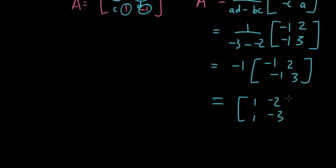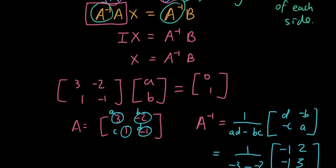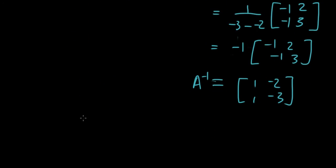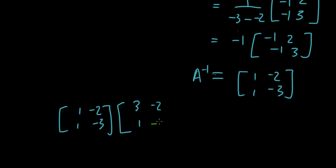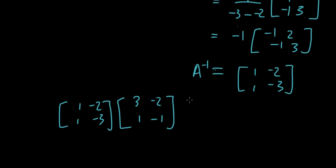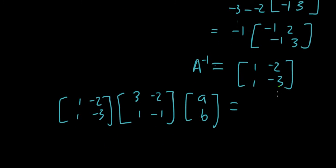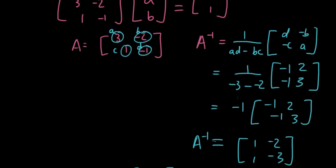So of negative 1, 2, negative 1, 2, negative 1, 3. So then I have 1, negative 2, negative 3, and that is the inverse of a. And then I have AB equals, and I'm going to multiply this at the front as well. So 1, negative 2, 1, negative 3 by 0, 1.